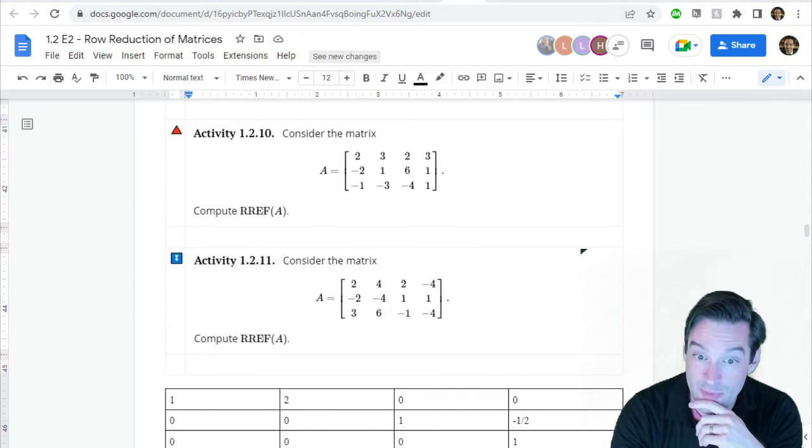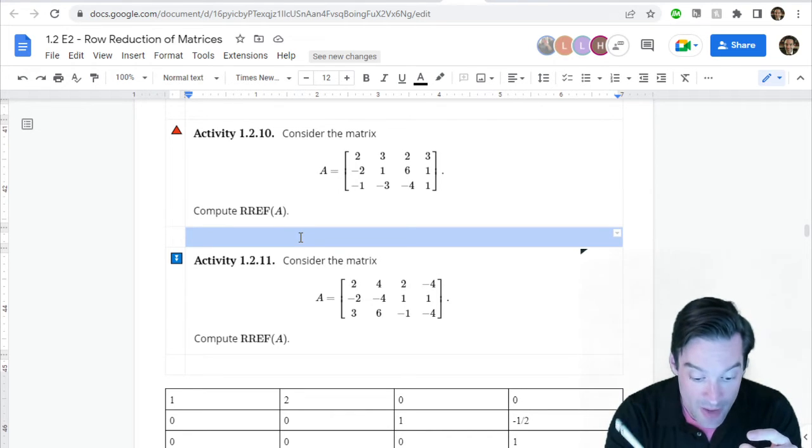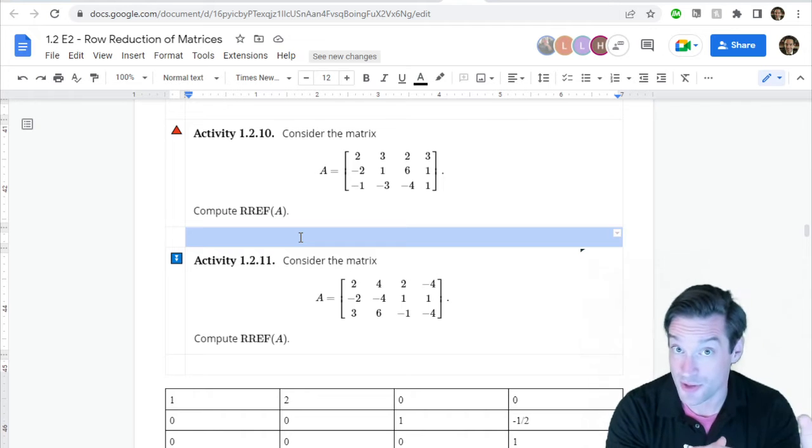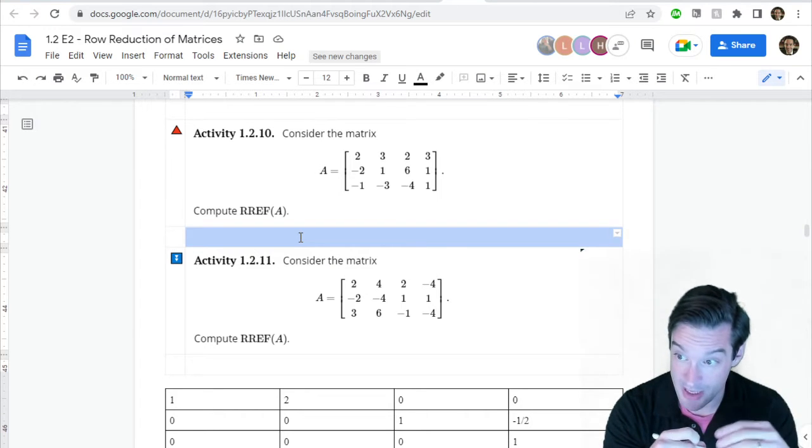Your job is to take this 3x4 matrix and reduce it down into its reduced row echelon form. And in the process, please do list alongside what are the steps that you're taking. So what are the row operations that you're using?